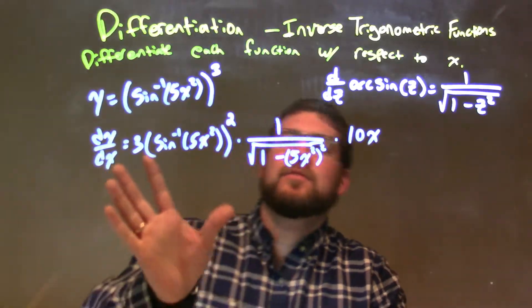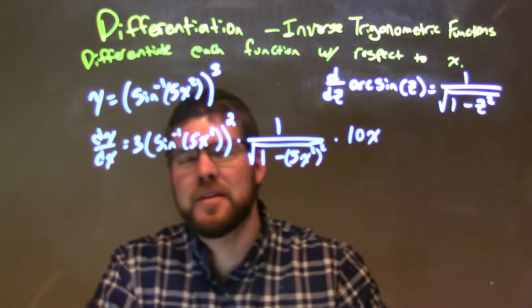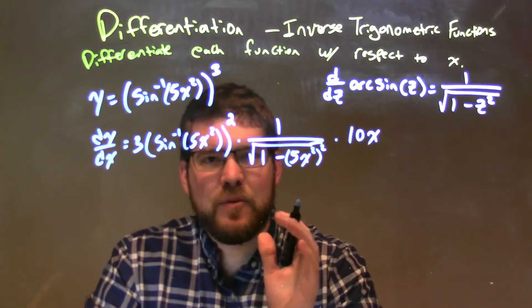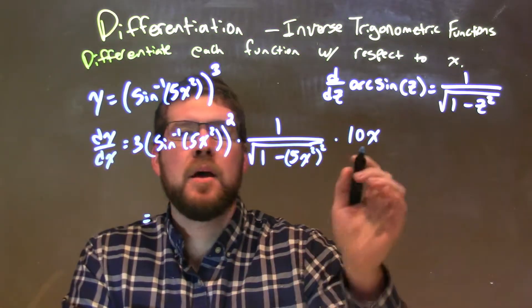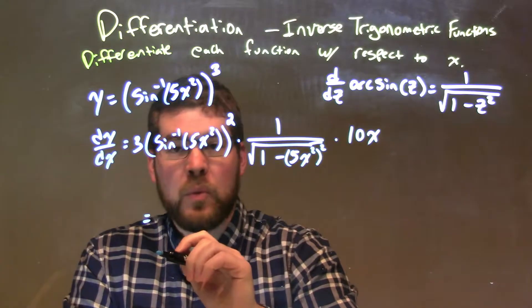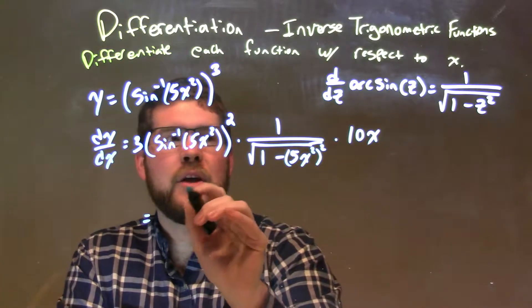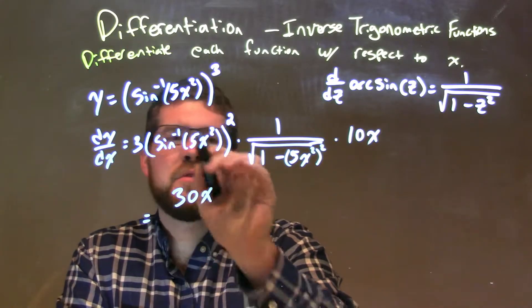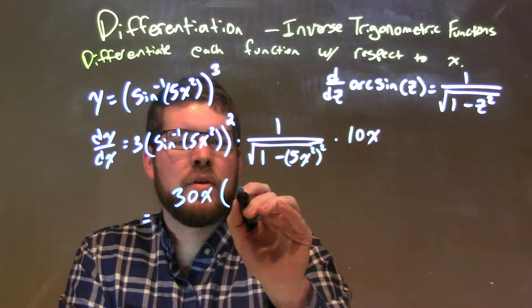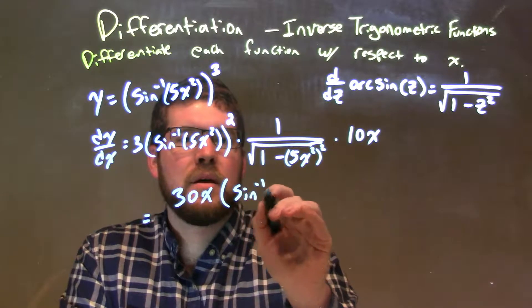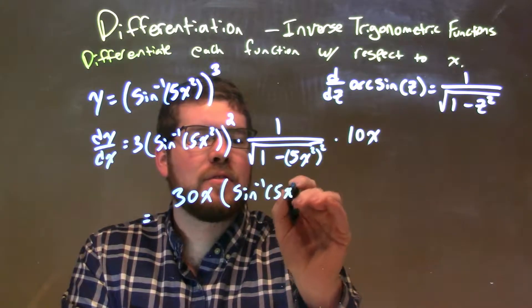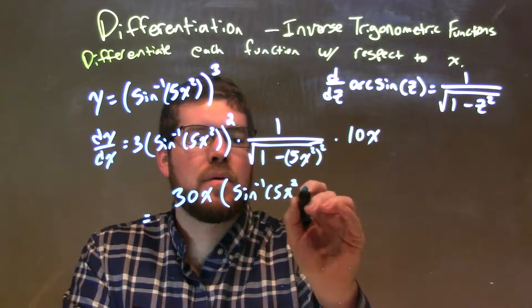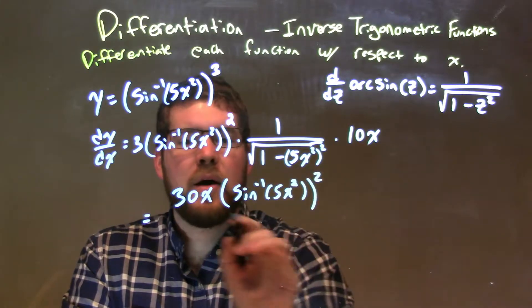So we have this three-part basically here for this derivative. Let's see if we can condense it a little bit to one big fraction. Well, the 10x and the 3, we multiply the other bit, have a 30x out front. We're just going to leave this parentheses here. We have the arc sine of 5x squared to the second power.